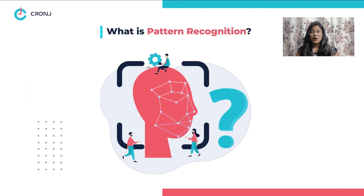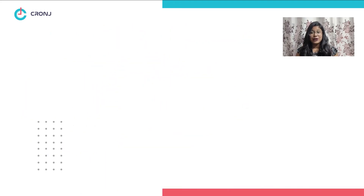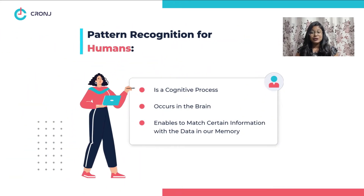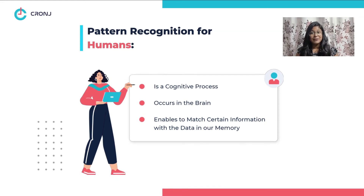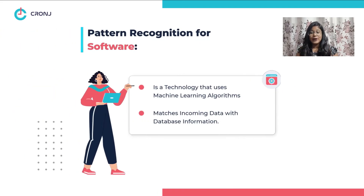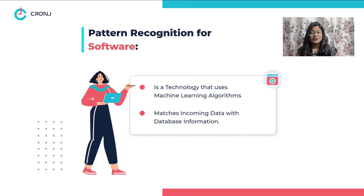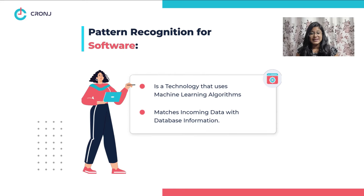Now, let's move on to pattern recognition. For the human brain, pattern recognition is the cognitive process that occurs in our brain, which enables us to match certain information with the data stored in our memory. In the world of software, pattern recognition refers to the technology that uses machine learning algorithms to match incoming data with the ones stored in the various databases.